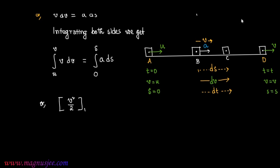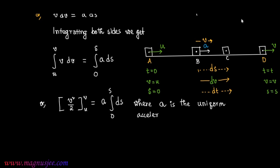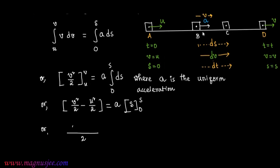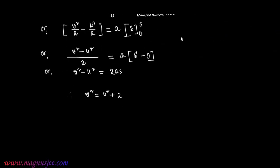Evaluating: [v²/2] from u to v equals a·[s] from 0 to s, where a is the uniform acceleration of the body during the motion. This gives v²/2 − u²/2 = a(s − 0), so (v² − u²)/2 = a·s, which means v² − u² = 2a·s. Therefore, v² = u² + 2a·s. Hence proved.